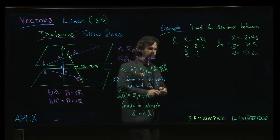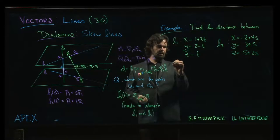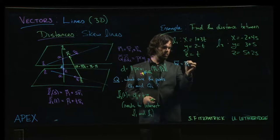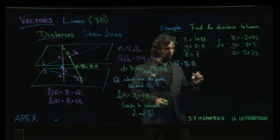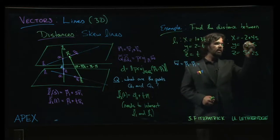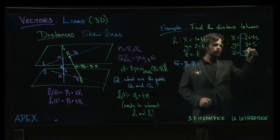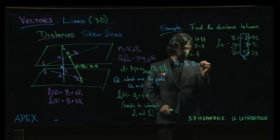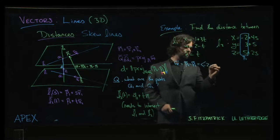So we need to first find a couple of vectors. w is p2 minus p1. So p2, we are reading off the position coordinates for the first line: minus 2, 3, 5.